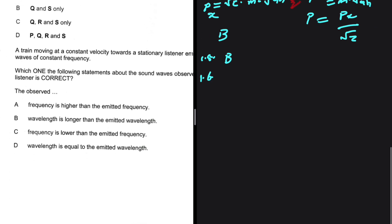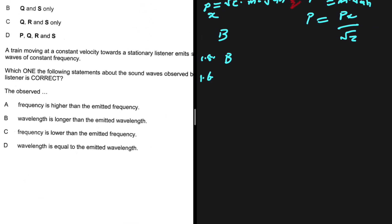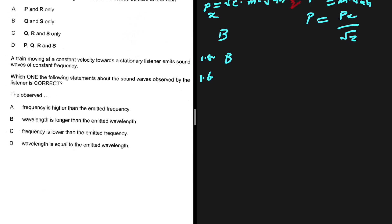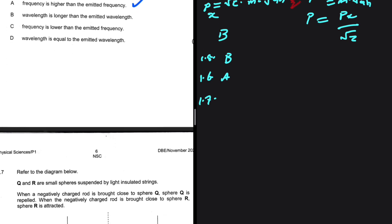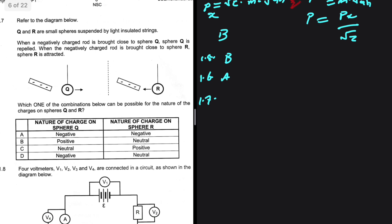1.6: A train moving at a constant velocity towards a stationary listener emits sound waves at constant frequency. Which one of the following statements about the sound waves observed by the listener is correct? The train is moving towards, if the train is moving towards higher frequency, lower wavelength. Let's look at A. Frequency is higher than the emitted frequency. We don't have to go any further. The answer is A. That is conceptual. We should be getting that one.